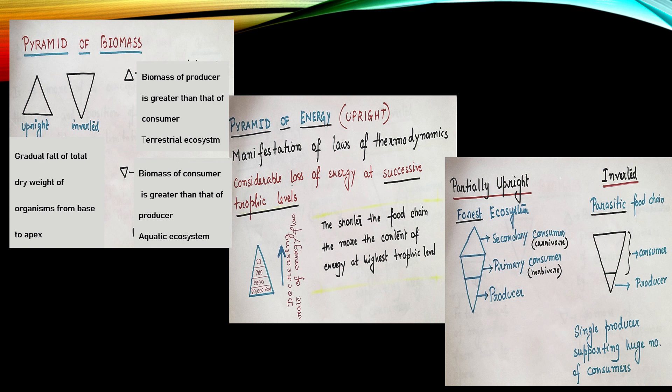This is an important point to be considered while studying the pyramid. Next coming to partially upright pyramids. This is seen in forest ecosystem. Here we see the producer is little less in comparison to that of the primary consumer. Again the secondary consumer on top of that gives the partially upright pyramidal structure.